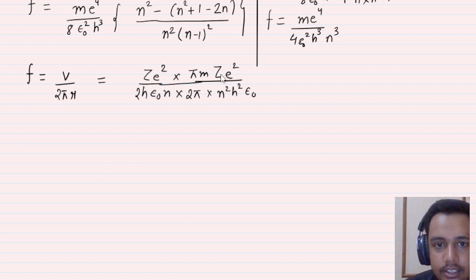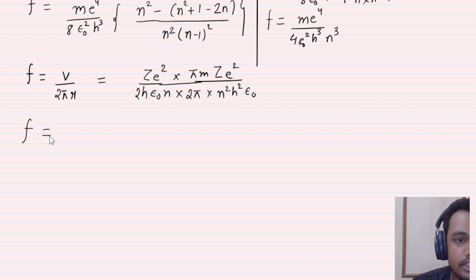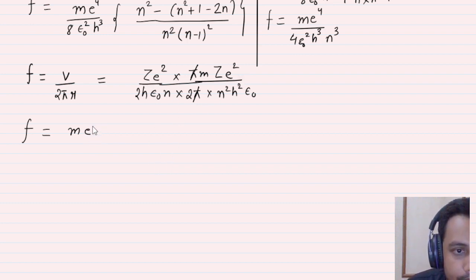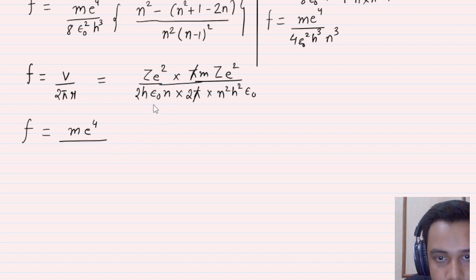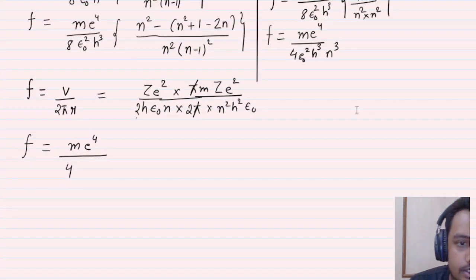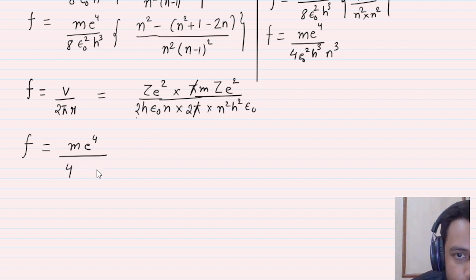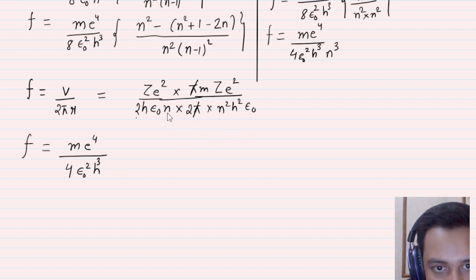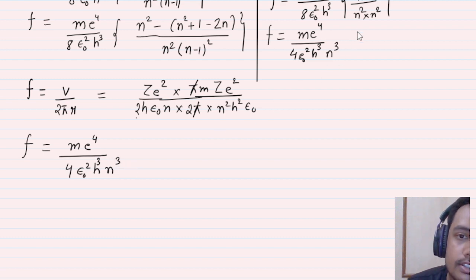Since Z = 1 for hydrogen, Z drops out. Combining: m is obtained, e⁴ is obtained. The π terms cancel. In the denominator: 2 × 2 = 4, ε₀ × ε₀ = ε₀², h × h² = h³, and n × n² = n³. So f = me⁴ / (4ε₀²h³n³). This formula and the quantum formula are the same — proof complete!